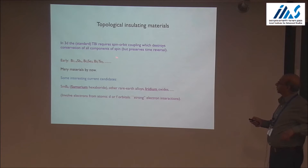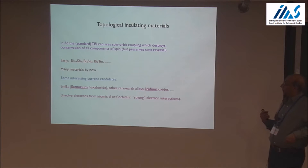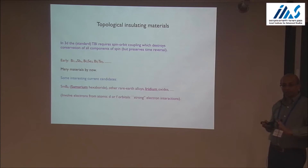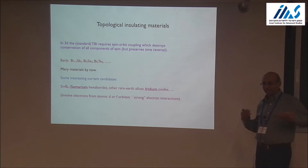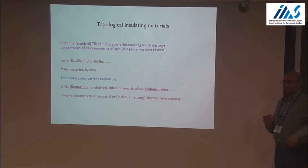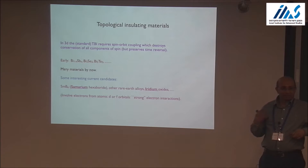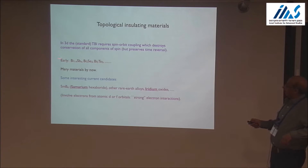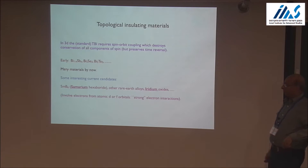What kinds of materials are we talking about? In 3D, the topological band insulator requires spin-orbit coupling, which couples the spin of the electron to the lattice and breaks rotational symmetry of space. In the presence of spin-orbit coupling, spin conservation is completely lost. But spin-orbit coupling has the interesting property that though it breaks spin conservation, it preserves time reversal symmetry — it's L dot S, roughly speaking, and both L and S are odd under time reversal. Early materials explored were alloys made out of bismuth: bismuth selenide, bismuth antimony, bismuth telluride, and so on. There are now many, many materials — a huge explosion of materials.